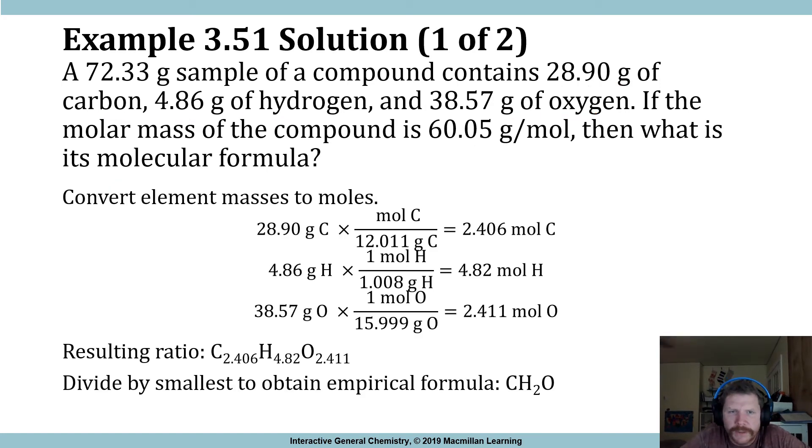Now we'll see all this played out right here. So our mass of carbon 28.9 grams is converted into 2.406 moles of carbon. 4.86 grams of hydrogen is converted into 4.82 moles of hydrogen. 38.57 grams of oxygen is converted into 2.411 moles of oxygen. So effectively, this gives us a molecule that's C 2.406 H 4.82 O 2.411. And when you look at that, you know that this is not right because it's not whole numbers.